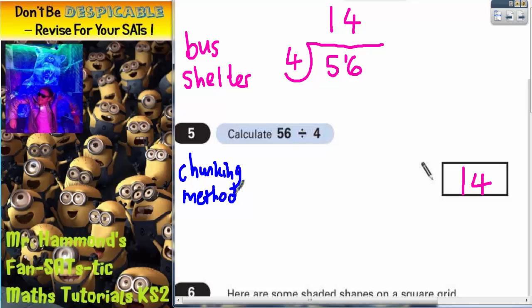Now the chunking method is all about repeated subtraction, where you are subtracting chunks of 4 from 56 until you've got nothing left.